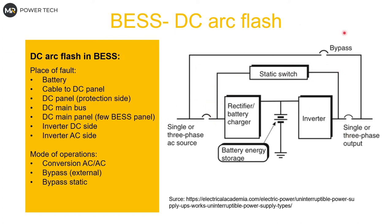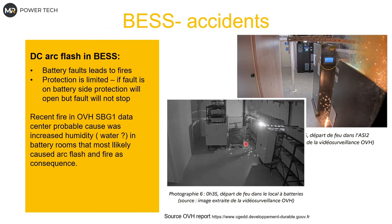Different modes of operation — bypass, double conversion, AC-to-AC — matter more for the AC side than DC. From what I found for real incidents: there was an accident at the OVH data center in Strasbourg, I believe in 2021. The official report — in French — stated it was a battery fault leading to fire, caused by increased humidity detected by sensors. For me, it looks like the battery fault created an arc flash which then caused the fire, and we know many websites went down because of it.